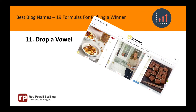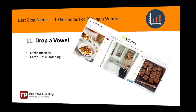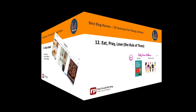Formula 11: Drop a vowel. We're all familiar with brands such as Flickr, Tumblr, Scribd, and Grindr. Dropping a vowel is a way to brand your blog as hip and cool. Here are some examples: Kitchen, Garden Tips, and Fashion Fever.